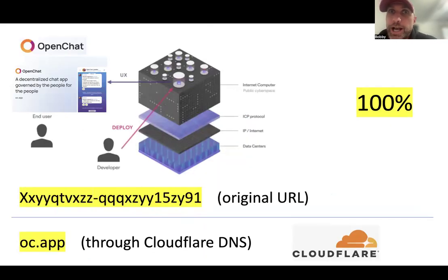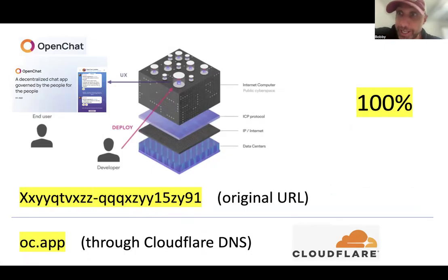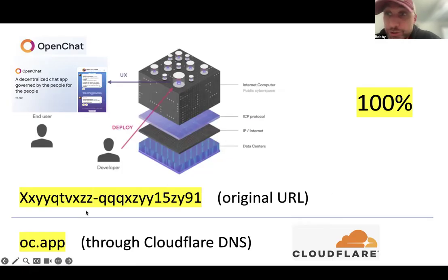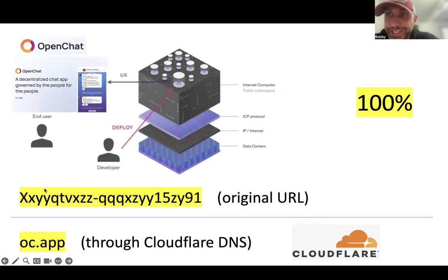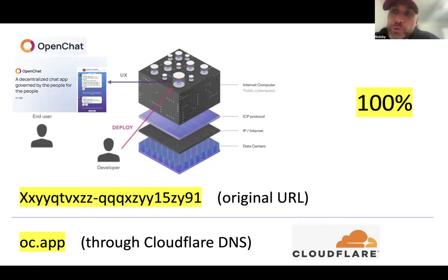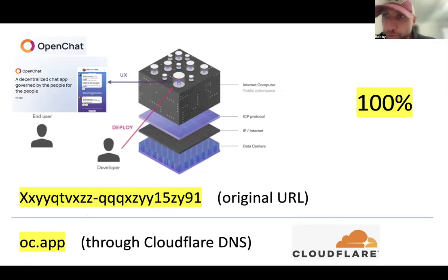With OpenChat, I think there were some issues accessing it through the oc.app URL, which is through an outside third party like Cloudflare. But before OpenChat decided to use Cloudflare for domain names, there was a canister ID — that's how we all accessed OpenChat and other ICP-based applications. It's just a bunch of random letters and numbers all strung together. And there were, if we rewind about two years ago, a number of people complaining that the canister ID just isn't the most friendly user experience for a new user.